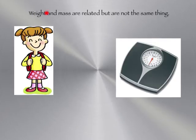So weight and mass are related, but they are not the same thing. Mass is a measure of the amount of matter, and how thick an object is. And weight is a measure of a pull of gravity.